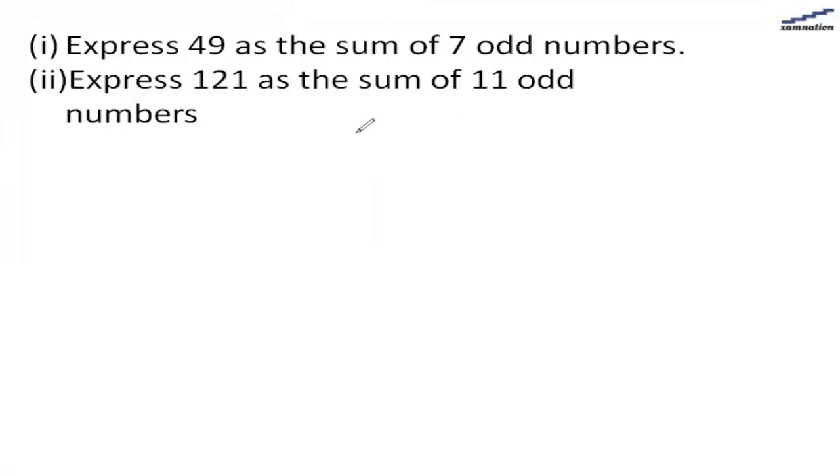In this question we are asked to express 49 as a sum of 7 odd numbers. 49 can be represented as 1 plus 3 plus 5 plus 7 plus 9 plus 11 plus 13.